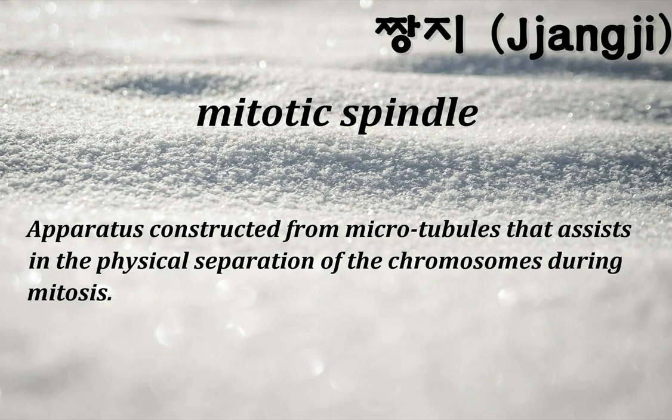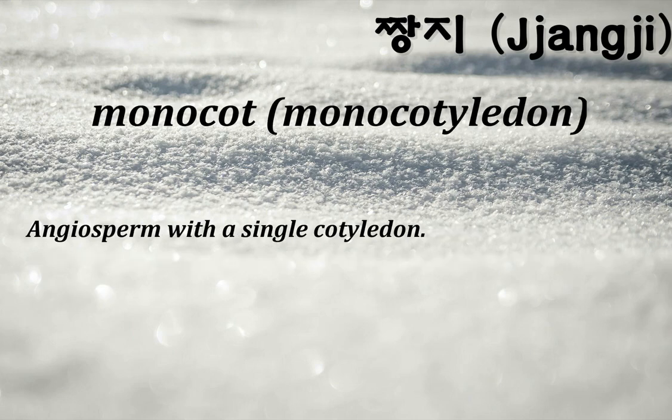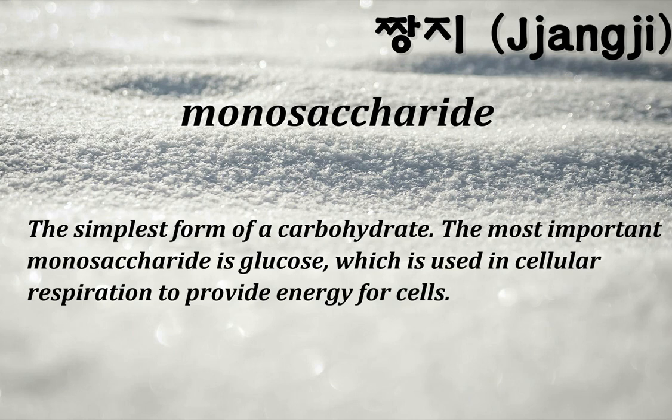Mitotic spindle: apparatus constructed from microtubules that assists in the physical separation of chromosomes during mitosis. Monocot (monocotyledon): an angiosperm with a single cotyledon. Monosaccharide: the simplest form of carbohydrate; the most important monosaccharide is glucose, used in cellular respiration to provide energy for cells.